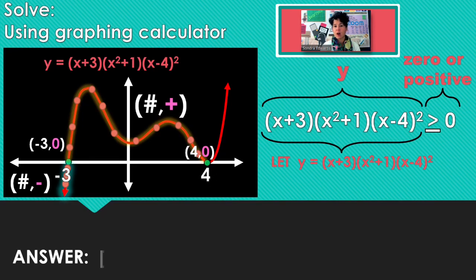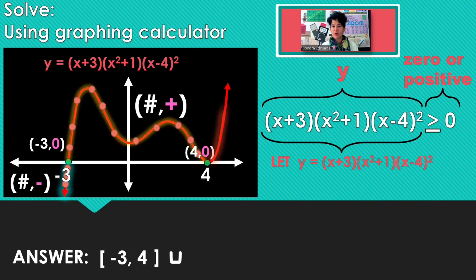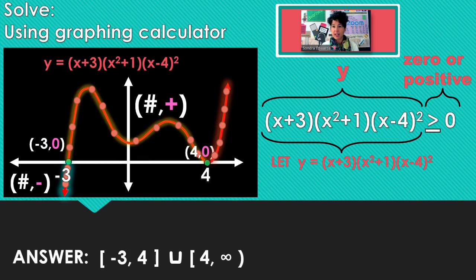So far we're including negative 3 and all the numbers up to 4, including 4. And after 4, all of those points also have positive y-coordinates, so we're including 4 and going through infinity.